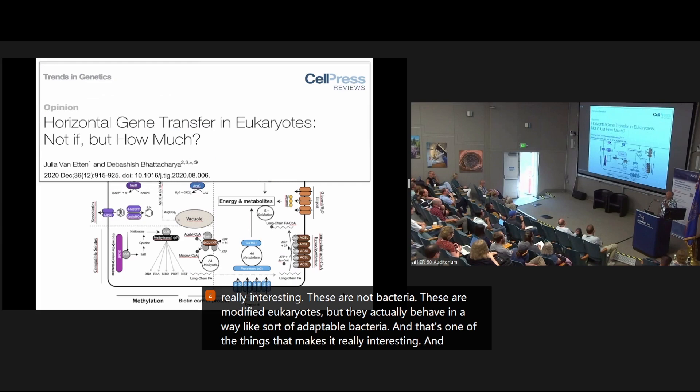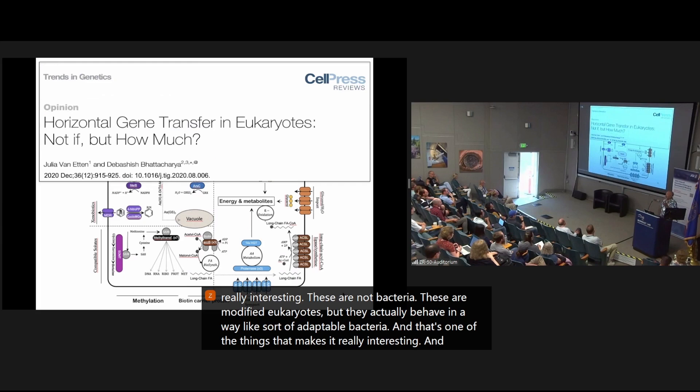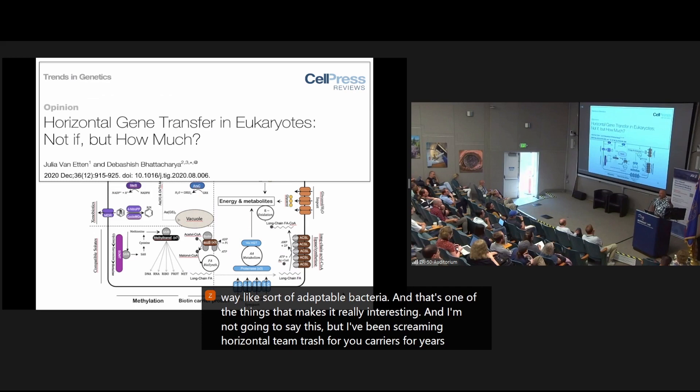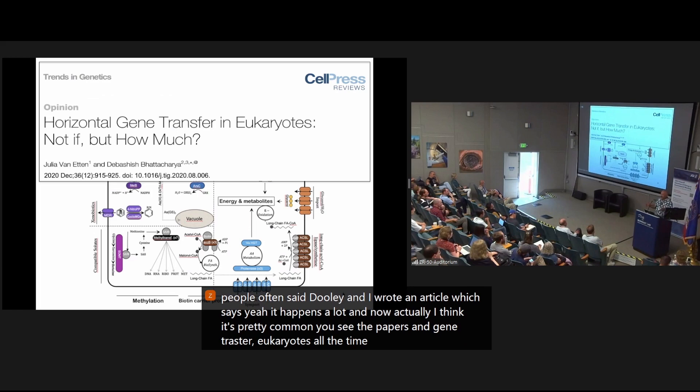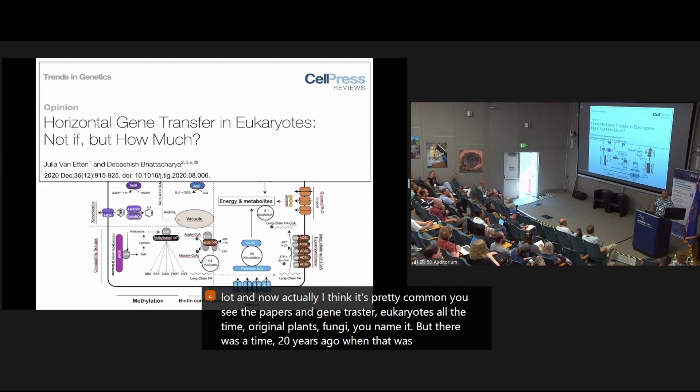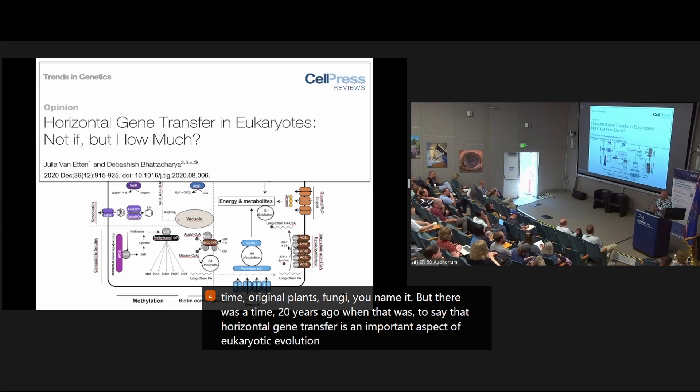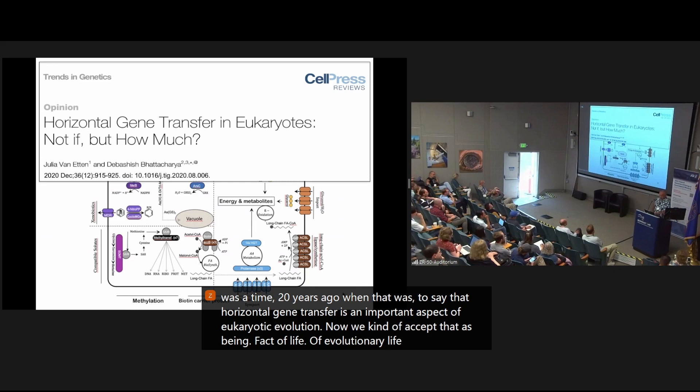And I'm not going to say this, but I've been screaming horizontal gene transfer eukaryotes for years, and people often say, that's nonsense, it never happens. Julie and I wrote an article which says, yeah, it happens a lot. And now, actually, I think it's pretty common. You see the papers on gene transfer eukaryotes all the time, origin of plants, fungi, you name it. But there was a time 20 years ago when that was heretical to say that horizontal gene transfer is an important aspect of eukaryotic evolution. Now we kind of accept that as being a fact of life, of evolutionary life.